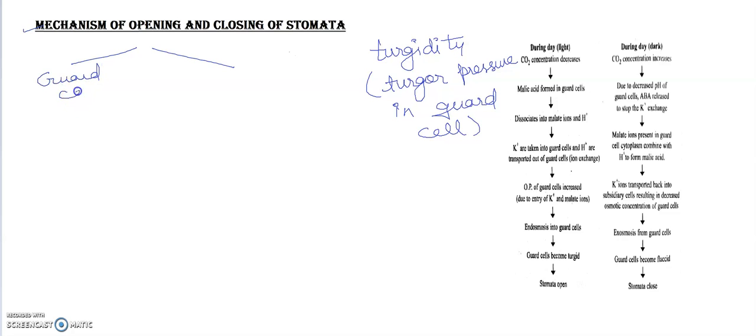Two conditions hai aapke paas. Agar guard cell flaccid after it can be, water content lose karta hai. So what will happen? Guard cells become flaccid and stomata become closed. And flaccid means there will be complete loss of water from the guard cells.